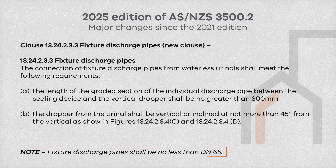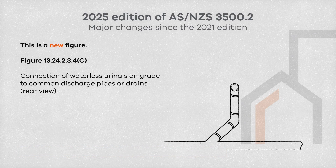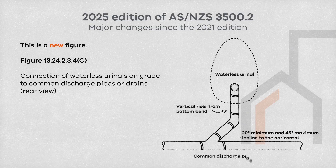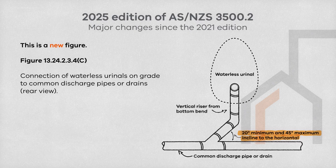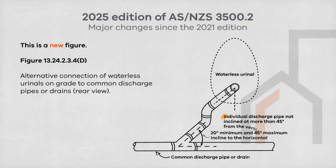This new clause outlines the requirements that fixture discharge pipes from waterless urinals must comply with. A new figure illustrates the connection of waterless urinals on grade to common discharge pipes, showing the 20-degree minimum and 45-degree maximum incline to the horizontal drain. Another new figure shows the individual discharge pipe not inclined at more than 45 degrees from the vertical.